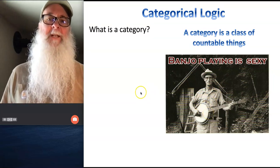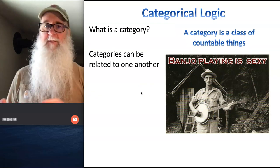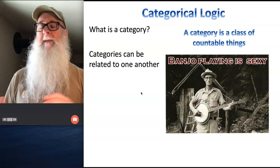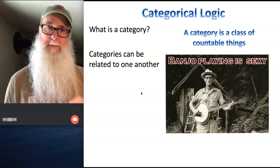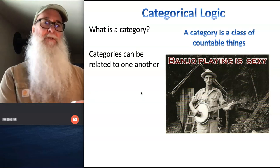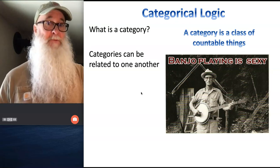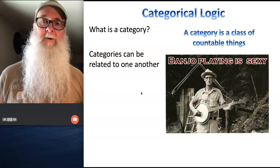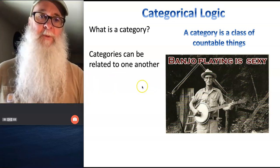All right, so we're looking at countable categories of things, and what we're going to do with categorical logic is we're going to take these categories of countable things, and we're going to demonstrate ways that they may be related to other countable categories of things. So like there's a particular relationship that exists between banjos and musical instruments. There's a certain relationship that doesn't exist between banjos and automobiles. And so these are countable categories of things that we can indicate are in certain relationships with one another.